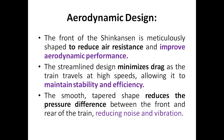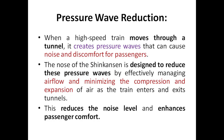The bullet train is called so because it travels almost 2–3 times faster than a normal train. At such speeds, drag must be minimized to maintain stability and efficiency. The smooth and tapered shape reduces the pressure difference between the front and the rear of the train — similar to the pressure difference experienced across bird wings in flight.